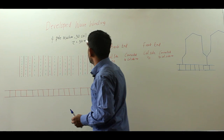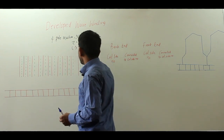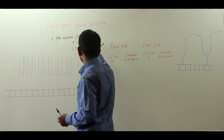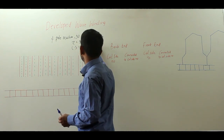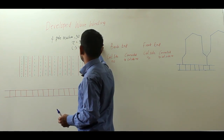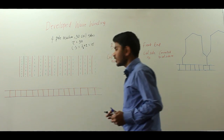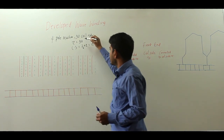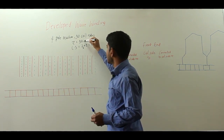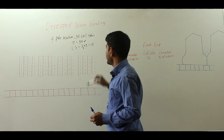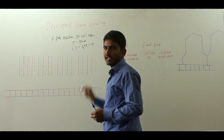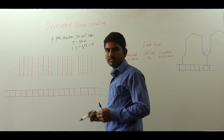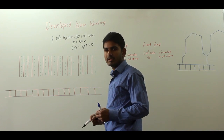The commutator segments will be half of the total number of conductors, that is half of Z, giving you 15. So there should be 15 commutator segments. The total number of conductors is 30 with one conductor in each slot, so you are having 30 slots for a single layer wave winding.